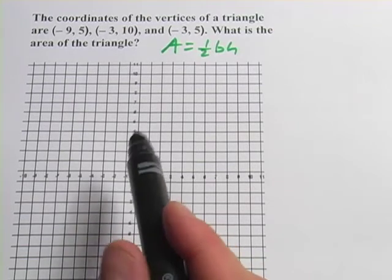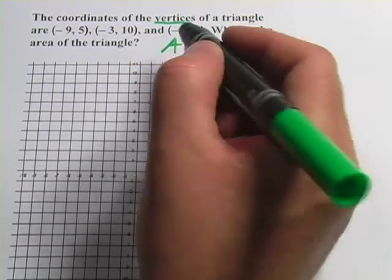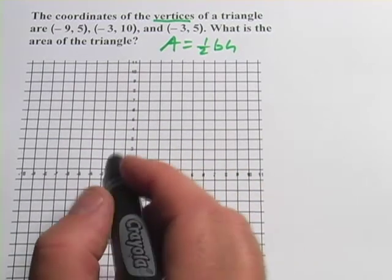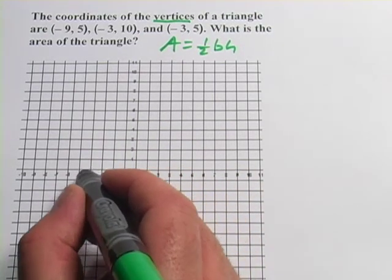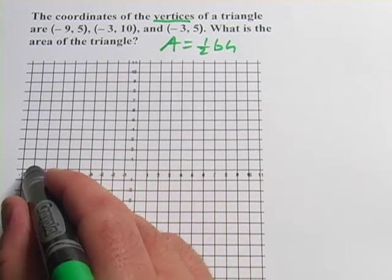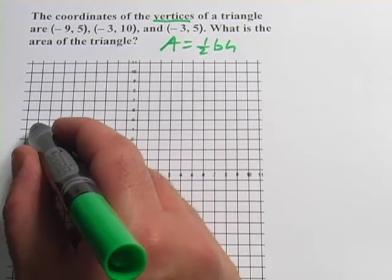So let's go ahead and plot the vertices. And the vertices here are the corners of the triangle, the points. So let's do that. We've got negative 9, 5. So 1, 2, 3, 4, 5, 6, 7, 8. That's negative 9 and 1, 2, 3, 4, 5.